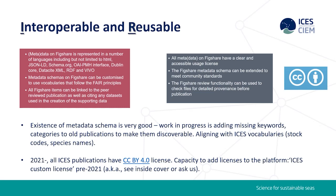Interoperable and reusable: these two screenshots are from the Figshare website showing what the new platform gives us. The existence of a metadata schema is very good. It is a very long work in progress adding missing keywords and categories to all publications to make them more discoverable. The ICES data centre have been using vocabularies for a long time and we are trying to align ourselves with what they use — for example, species names and stock codes.